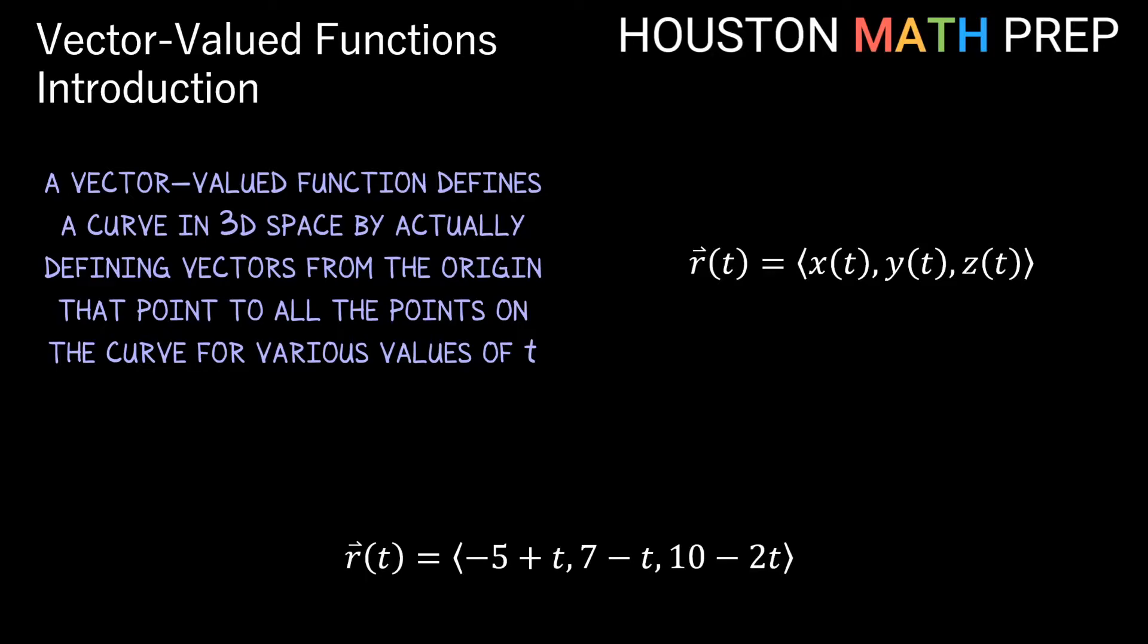A vector-valued function identifies a curve in space by actually defining vectors from the origin to all points on that curve. So you'll notice that plugging in a specific value for t actually gives us a vector and that vector points to a particular point on the curve through space.